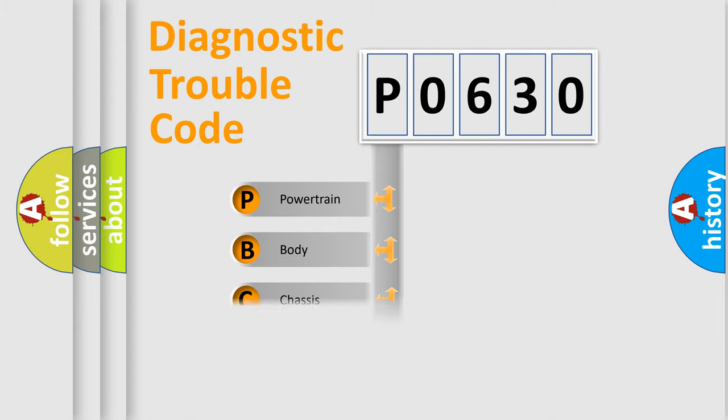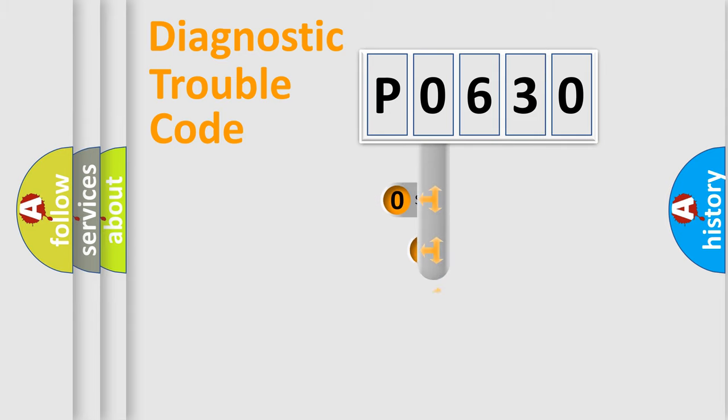Powertrain, Body, Chassis, Network. This distribution is defined in the first character code.